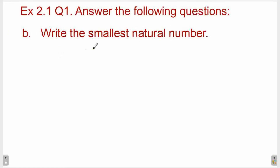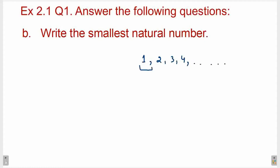Next is: write the smallest natural number. The smallest natural number we have discussed in our previous video. Natural numbers start from 1 — 1, 2, 3, 4 and so on. So the smallest natural number is 1. So 1 is the answer.